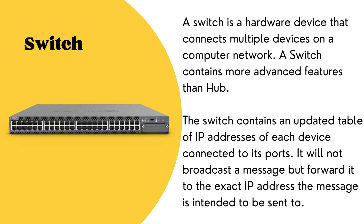A switch routes information to the relevant device on the network using the device's physical address. It is more advanced than a hub because it doesn't send the message to every computer in the network — it sends only to the device the message is intended for. Therefore, it is faster because it transfers data directly between the sender and receiver, and it does not broadcast like a hub.